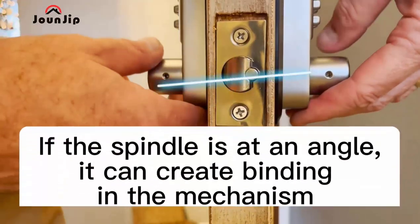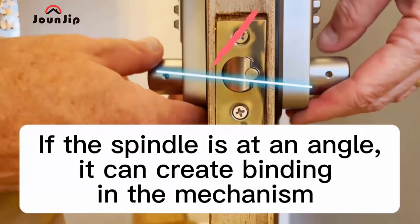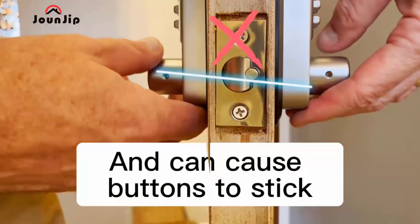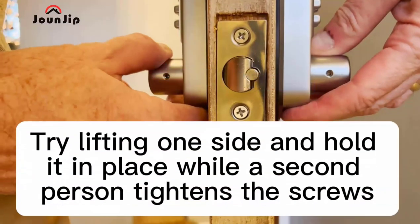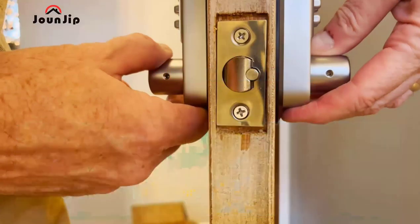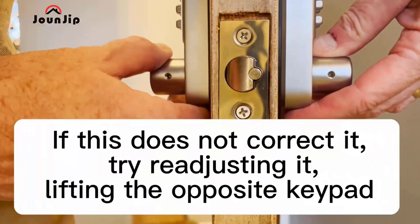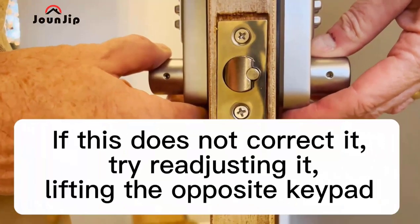That's because if the spindle is at an angle, it can create binding inside the mechanism and cause the buttons to stick. Try lifting one side and hold it in place while a second person tightens the screws. If this does not correct it, try readjusting it, lifting the opposite keypad.